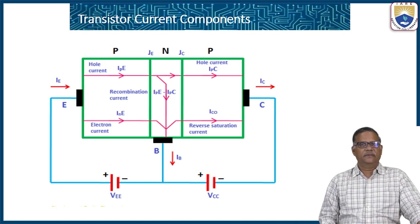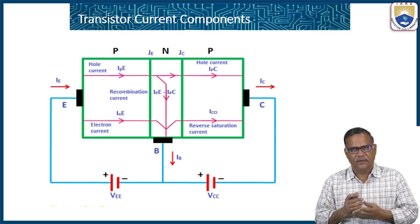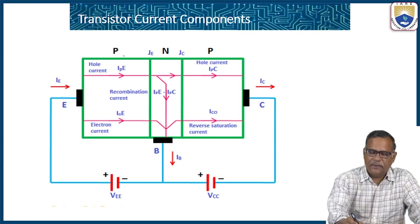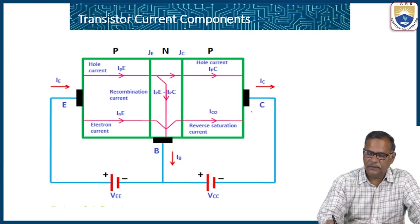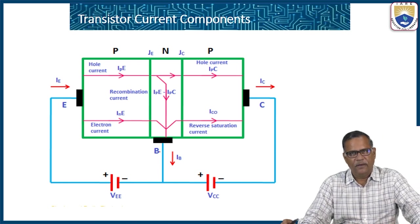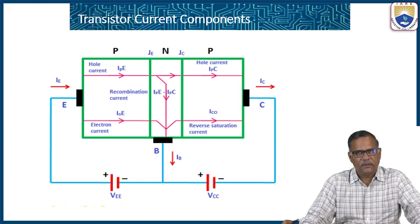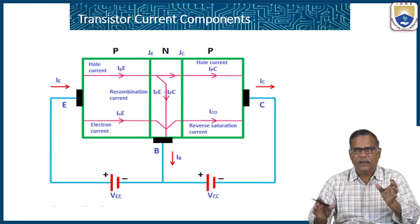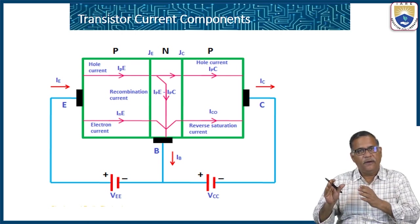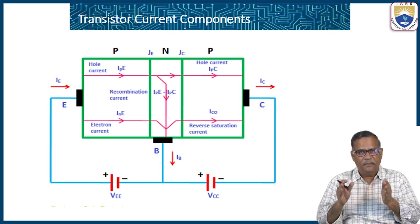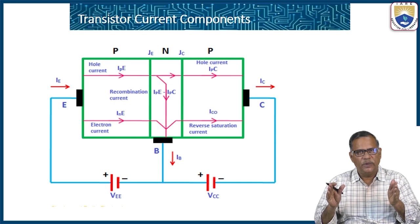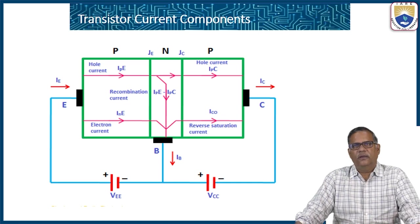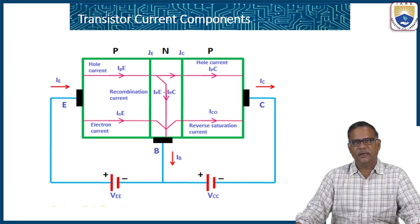Now let us see the various transistor current components in a BJT — bipolar junction transistor. Taking a typical PNP transistor: the emitter is P-type, the base is sandwiched between the two P-type regions, and the collector is P-type. The emitter is heavily doped, the collector is moderately doped, the area of the collector is more than the area of the emitter, and the base is lightly doped. This is how the construction of the BJT is done.